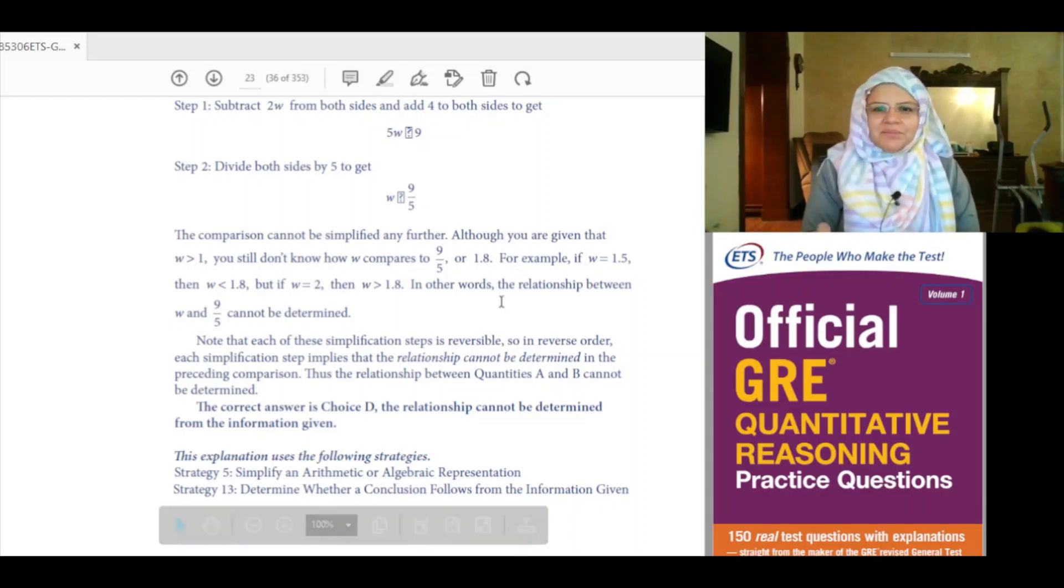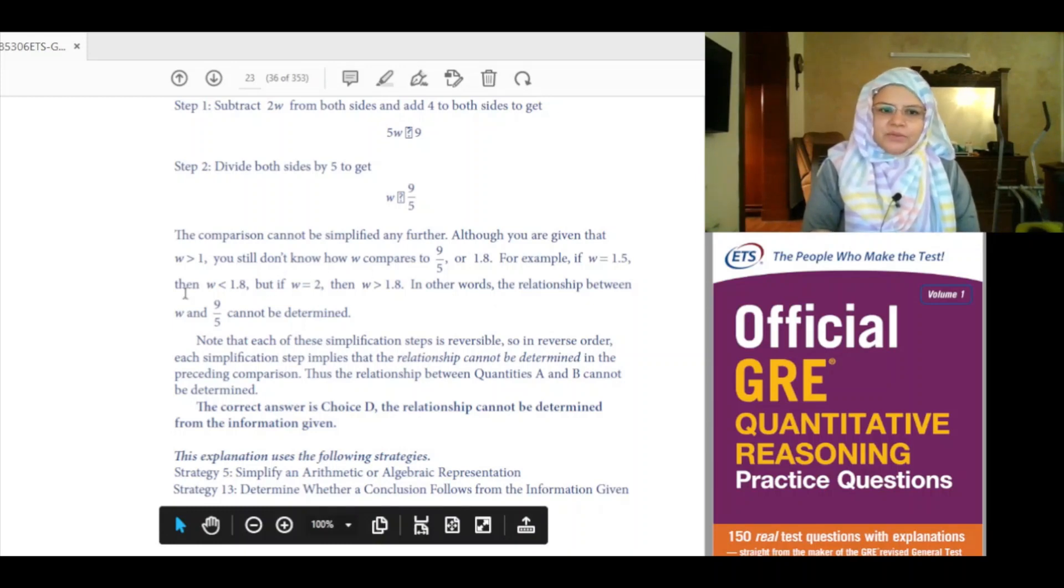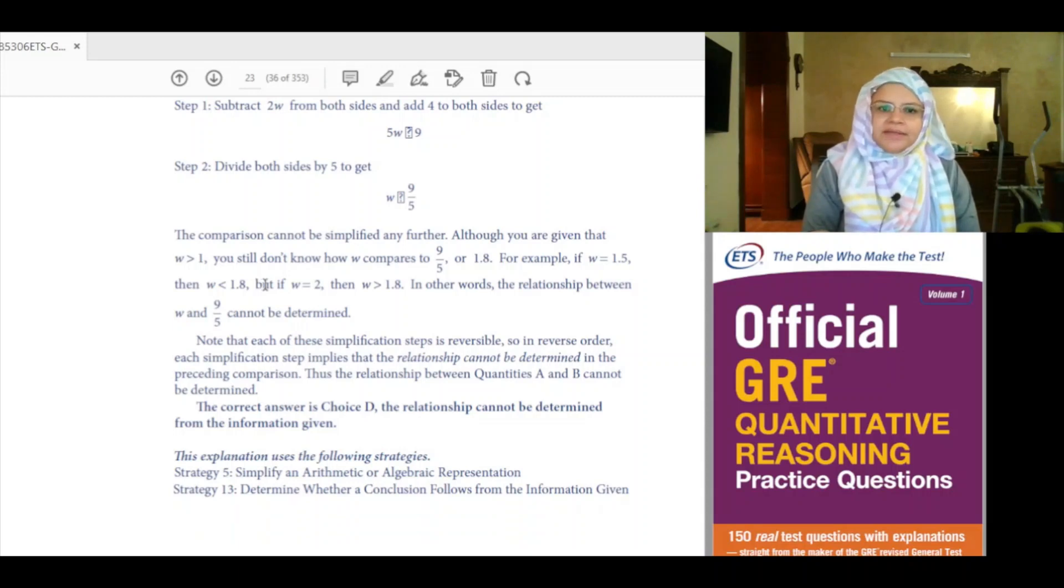For example, if W is equal to 1.5, then W is less than 1.8. But if W is equal to 2, then W is greater than 1.8. In other words, the relationship between W and 9 over 5 cannot be determined.